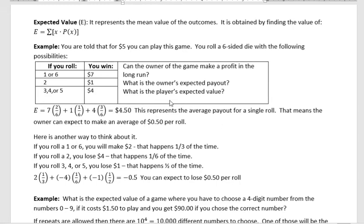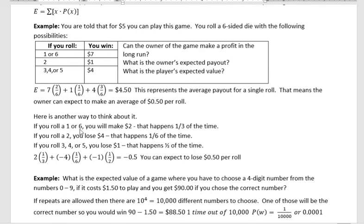What's the expected value for the player? If you roll a one or a six, you make $2 because you paid $5 to play but win $7, giving a positive $2 gain, and that happens one-third of the time (two out of six). If you roll a two, you lose $4, but that only happens one out of six times. If you roll a three, four, or five, you lose $1 because you get $4 back, and that happens half the time — three out of six.